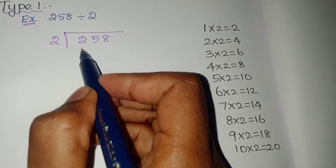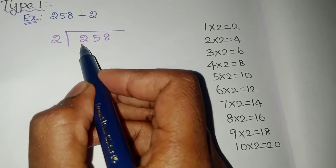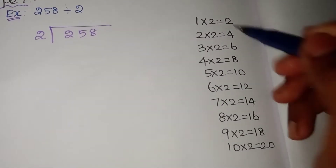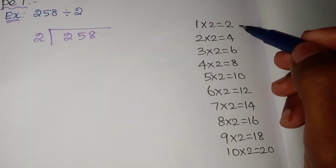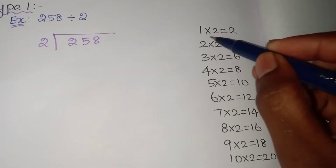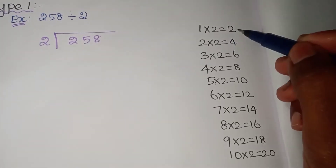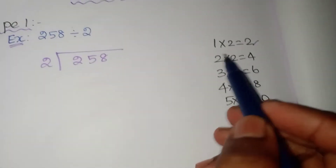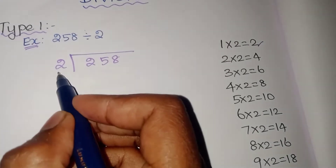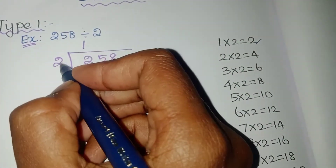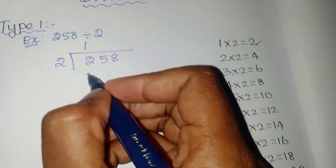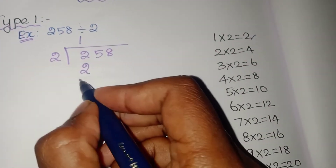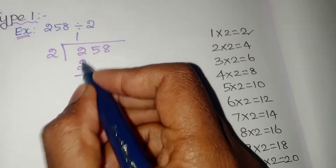If we take the first digit — what is the first digit? 2. So you have to check the second table. In the second table, 1 two is 2. So how many times? One time. So you have to write 1 here.